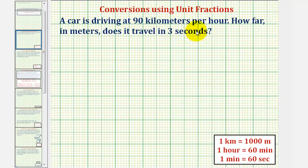A car is driving at 90 kilometers per hour. How far in meters does it travel in three seconds? So to answer this question, we'll first convert 90 kilometers per hour into meters per second, then determine the distance traveled in three seconds.